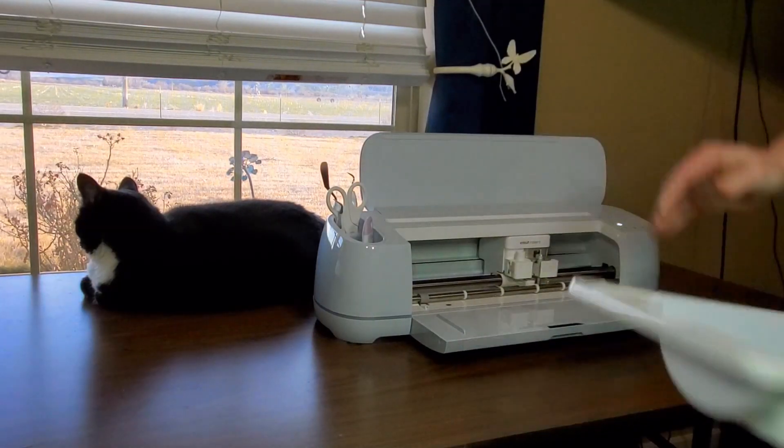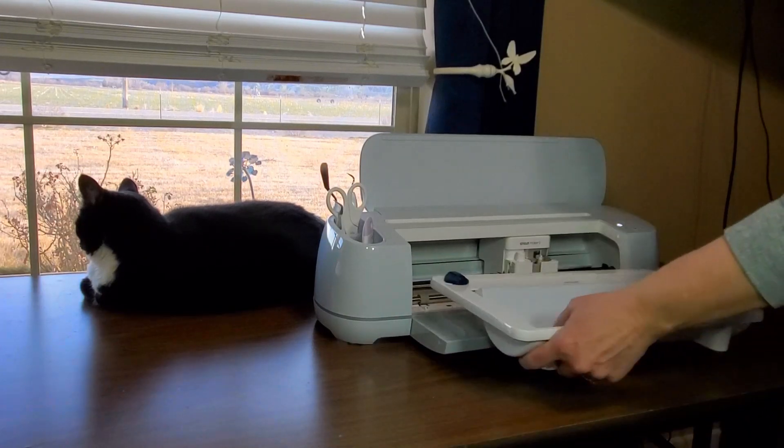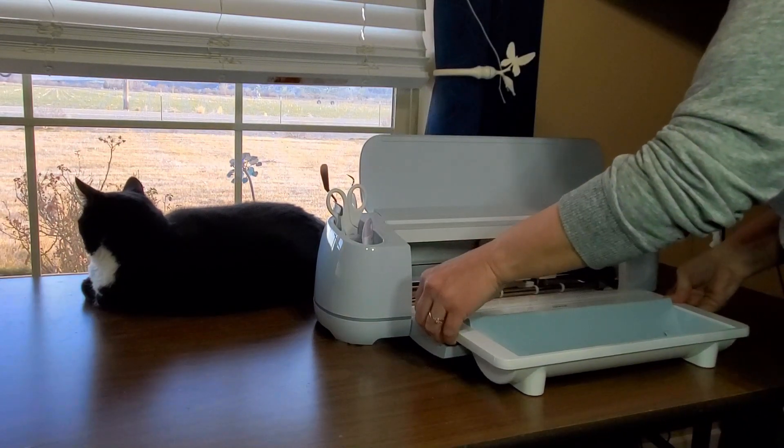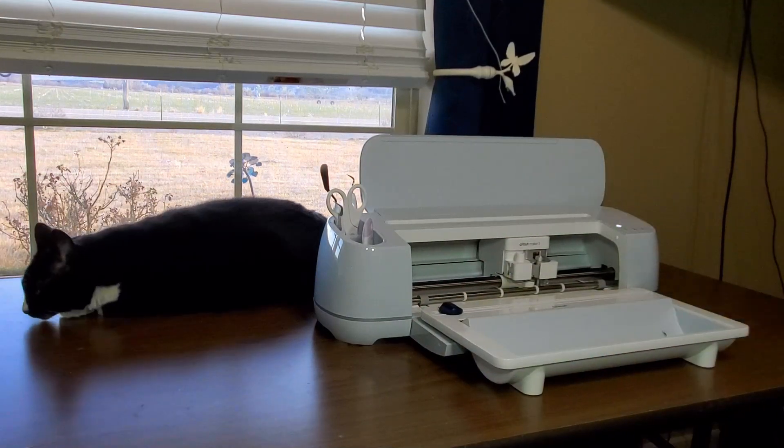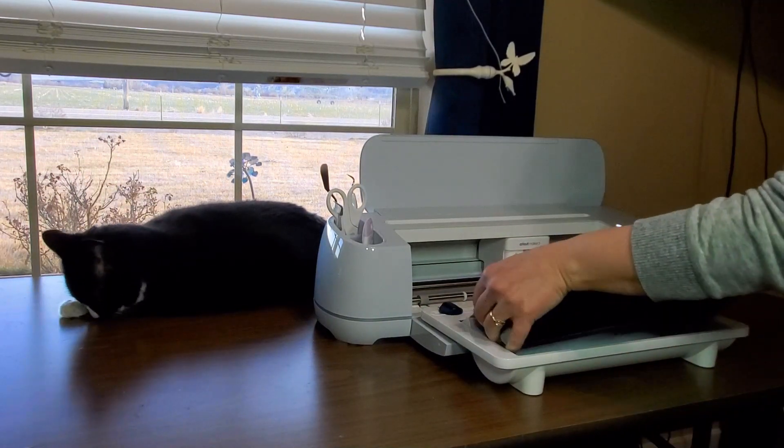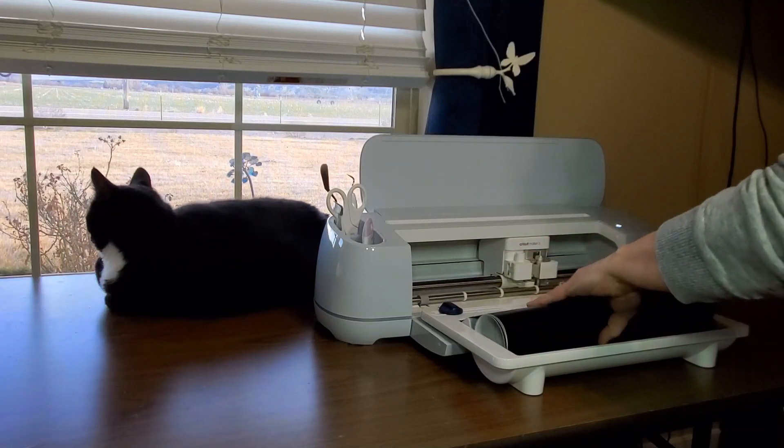Since I'm using the smart vinyl I am going to use this tray that is also from Cricut. You do not have to use this tray but it is very handy, so I'm going to put my vinyl in this and feed it under the cutter and into the machine.